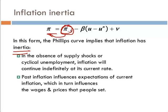In the absence of a supply shock or cyclical unemployment, inflation will continue indefinitely at its current rate. Let's say that's zero and that's zero. What is inflation going to be? It's going to be what it was in the previous period. So if it was 5% in the previous period and nothing happens, we're going to have 5% inflation forever. There's persistence in that data. Past inflation influences expectations of current inflation, which in turn influences the wages and prices that people set.